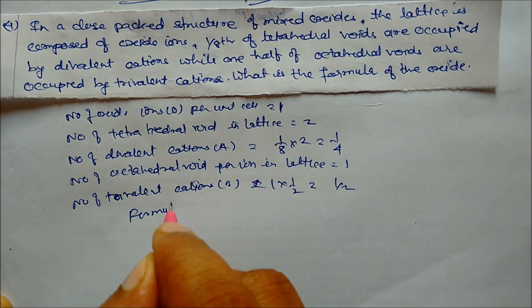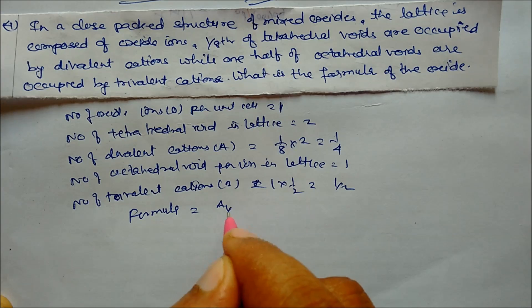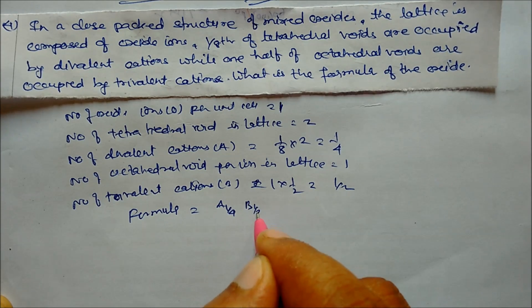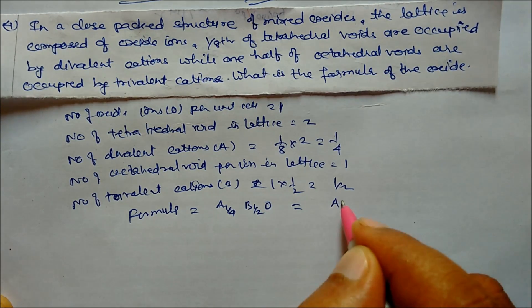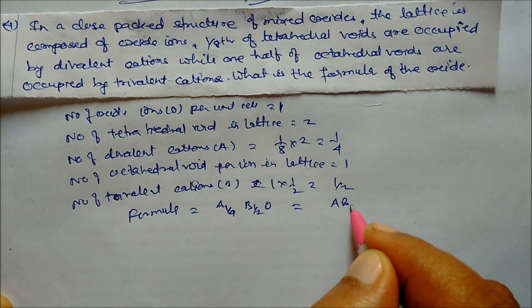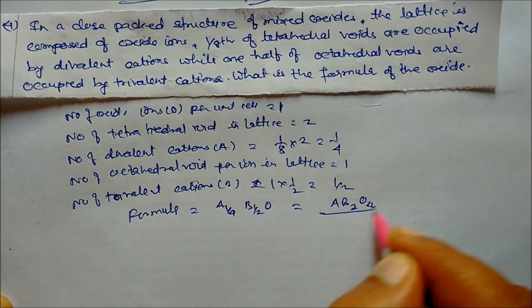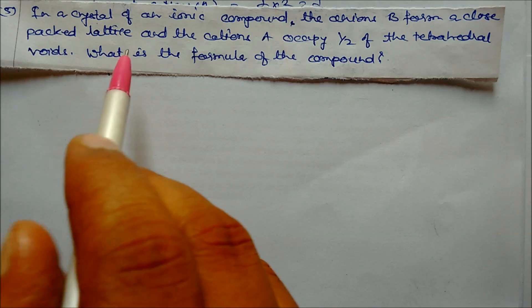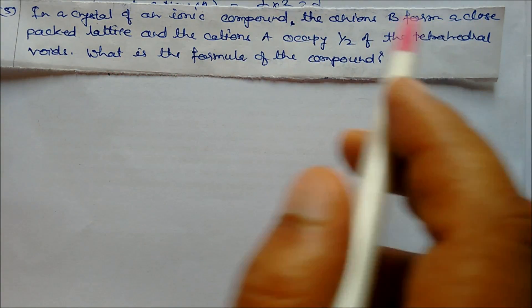So the formula is A(1/4) B(1/2) O, which simplifies to AB₂O₄. This is our formula.